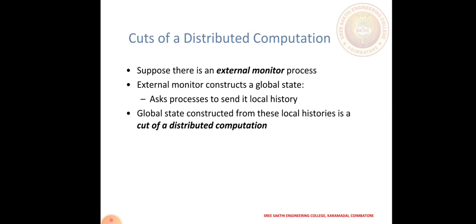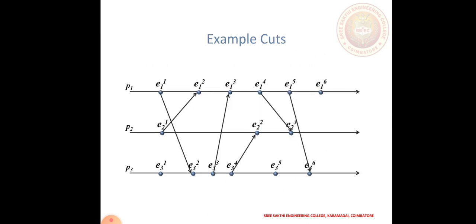Cuts play many vital roles in a distributed system. For example, consider three processes P1, P2, and P3. Each process has its own events. P1 has six events ordered by numbering: E1, E2, E3, E4, E5, E6. Likewise, P2 also has three events ordered by numbering, and P3 also has six events ordered by numbering.